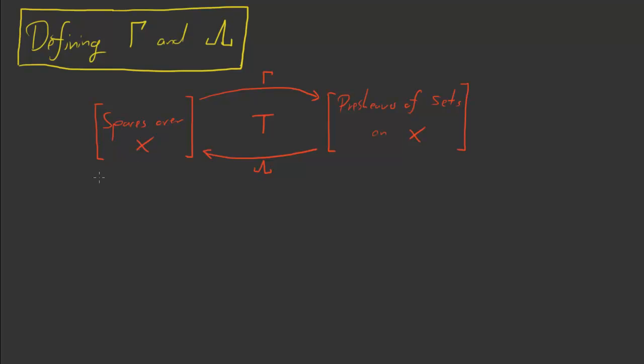I claimed in the last video that we would eventually be able to produce an adjunction diagram. This guy here. So our goal in this video is just to define the relevant functors, to define gamma and lambda.